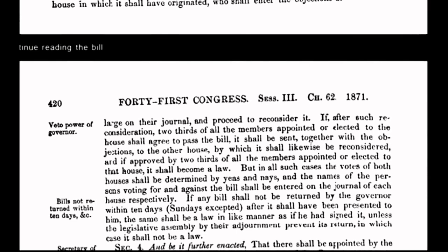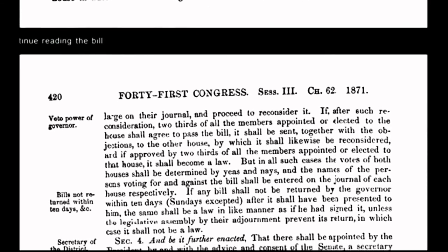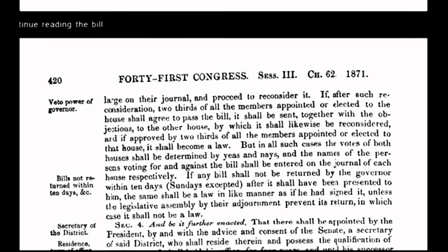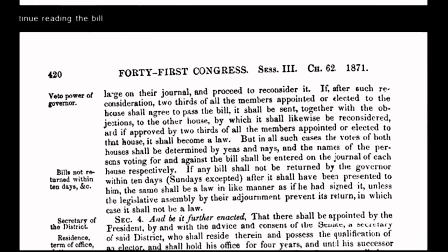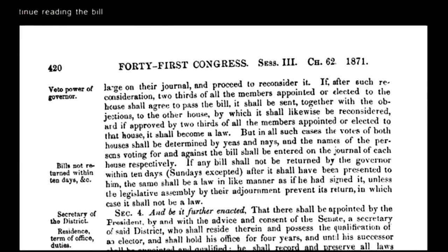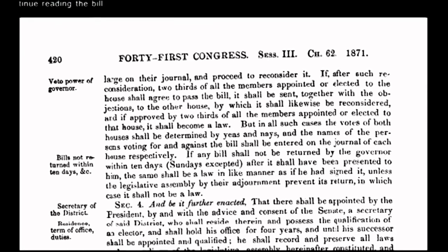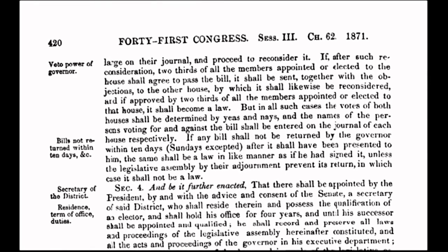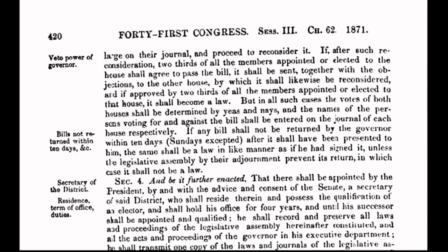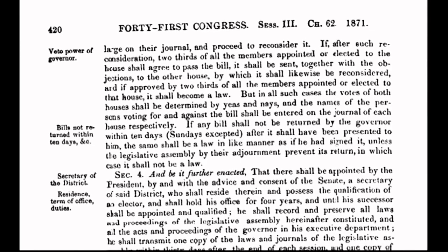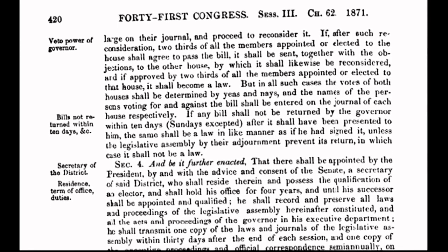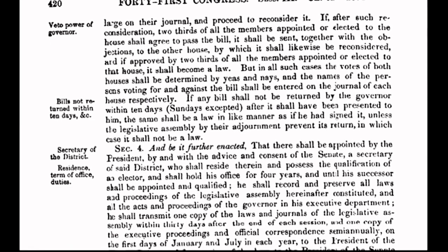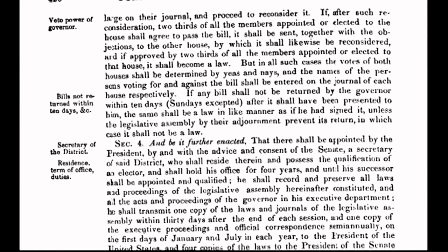Instead of having absolute and unalienable rights guaranteed under the organic constitution, we the people now have relative rights or privileges. One example is the sovereign's right to travel, which has now been transformed under corporate government policy into a privilege that requires citizens to be licensed — an example would be passports. By passing the Act of 1871, Congress committed treason against the people who were sovereign under the grants and decrees of the Declaration of Independence and the organic constitution.